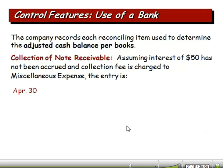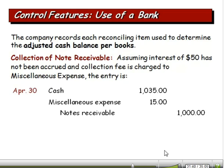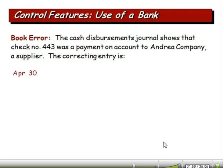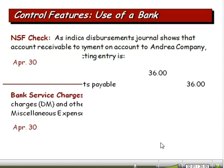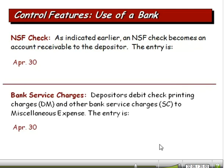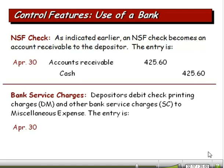Then we look at the adjusting journal entries we need to make on our books. To record the note receivable collection: debit Cash $1,035; credit Miscellaneous Expense $15, Notes Receivable $1,000, and Interest Revenue $50. For the book error on the check: debit Cash $36 and credit Accounts Payable $36. For the NSF check, which becomes accounts receivable to us: debit Accounts Receivable $425.60 and credit Cash $425.60. For the bank service charge: debit Miscellaneous Expense and credit Cash $30.